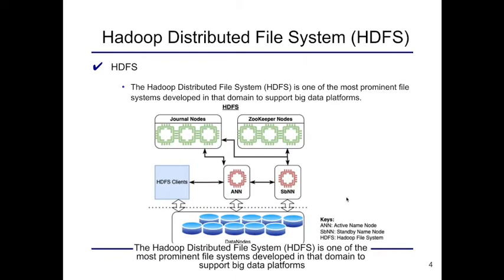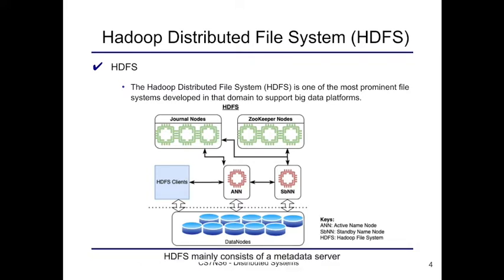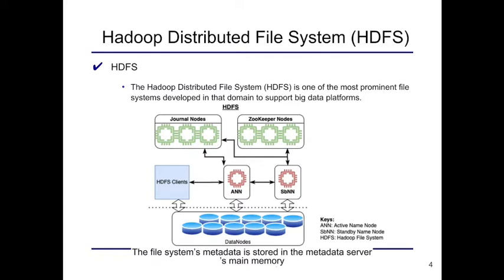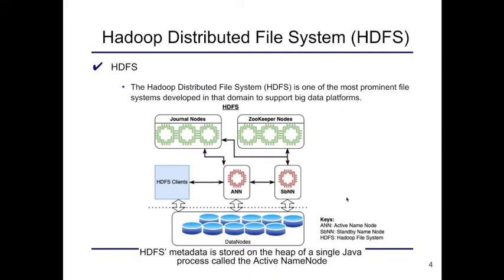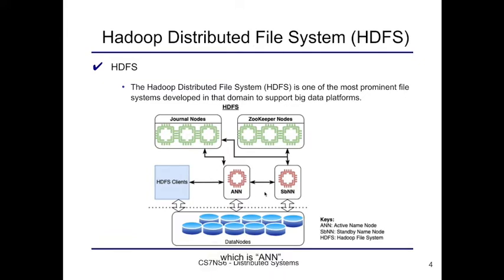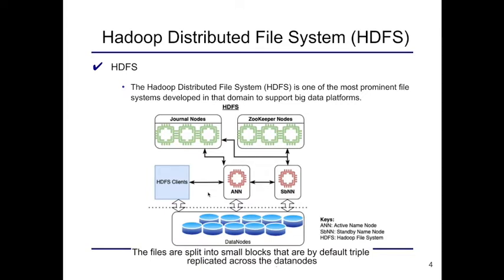The Hadoop Distributed File System, HDFS, is one of the most prominent file systems developed to support big data platforms. HDFS mainly consists of a metadata server called the name node and a set of data servers called data nodes. The file system's metadata is stored in the metadata server's main memory, while the actual file data is split into blocks that are replicated across the data nodes. HDFS metadata is stored on the heap of a single Java process called the active name node.